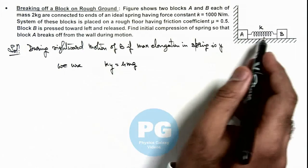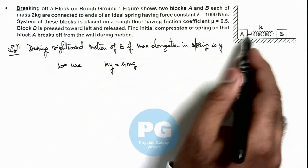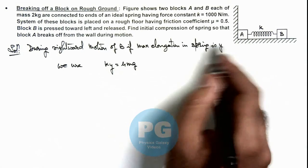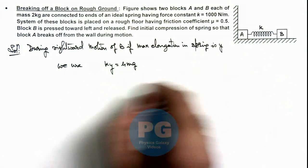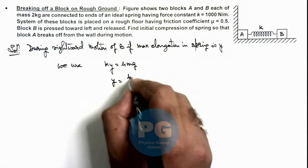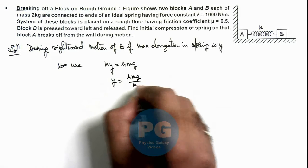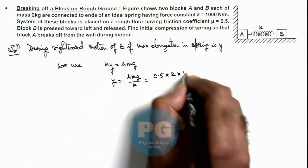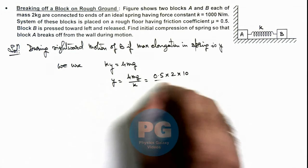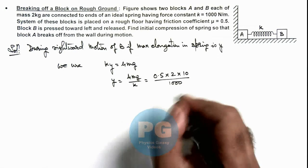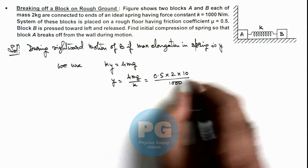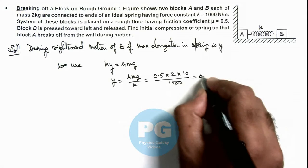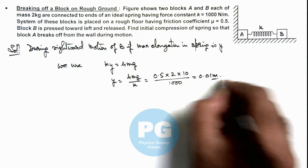For A to break off, because on A toward right is ky and toward left will be the friction. Here the value of y we can calculate as μmg by k, which is 0.5 multiplied by 2, we can take g as 10 divided by the value of k is 1000. So here this will be 1 by 100, that is 0.01 meter or we can take it 1 centimeter.